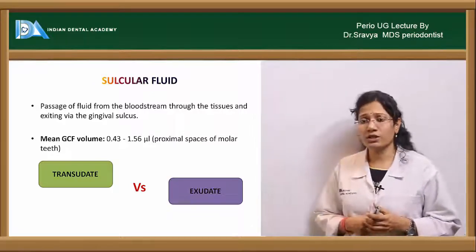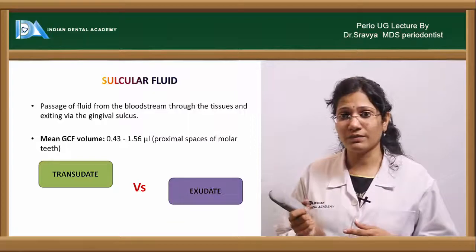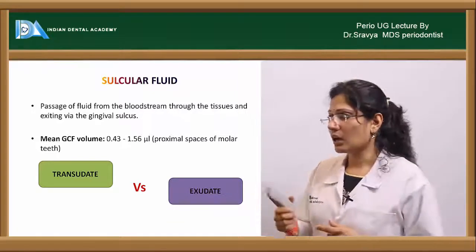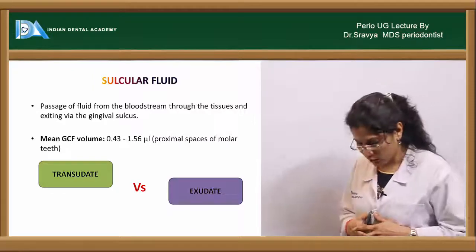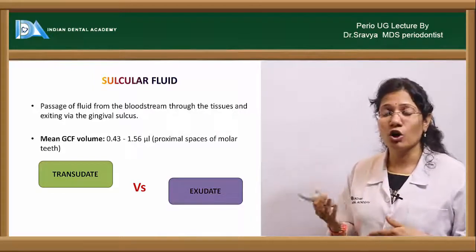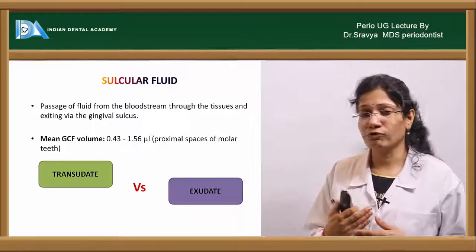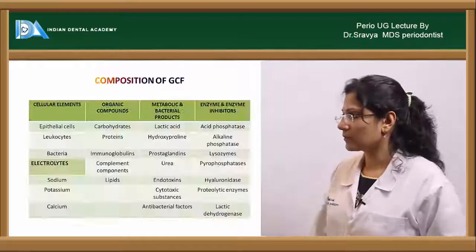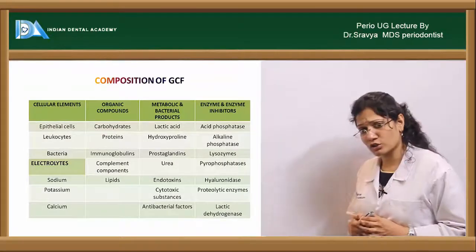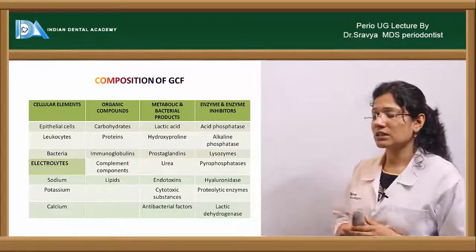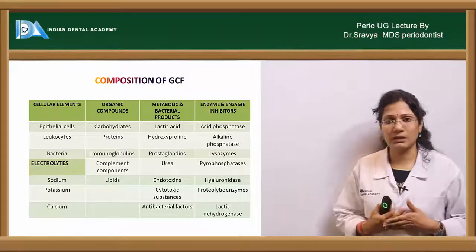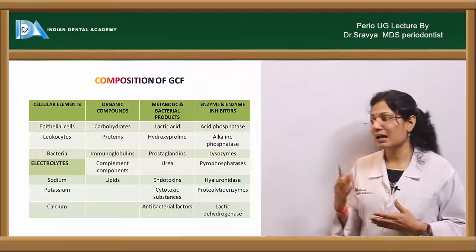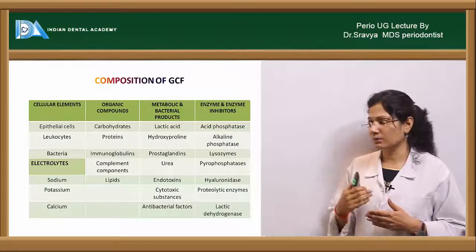The normal GCF flow is about 0.43 to 1.56 microlitre and is maximum at the proximal surface of molars. GCF is essentially a blood filtrate that passes through the tissues and exits into the gingival sulcus. Its composition includes cellular elements, electrolytes, organic compounds, metabolic and bacterial products, and enzymes and enzyme inhibitors.